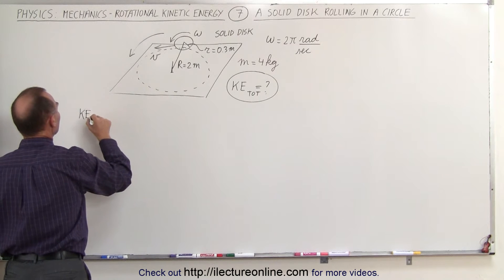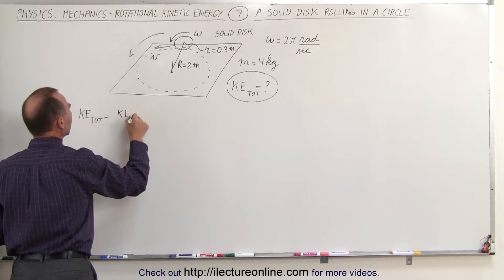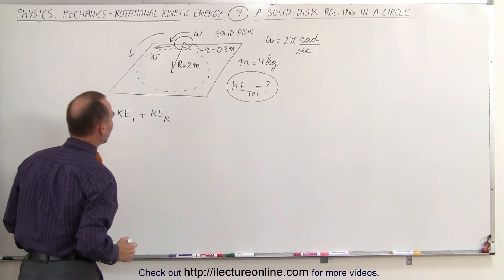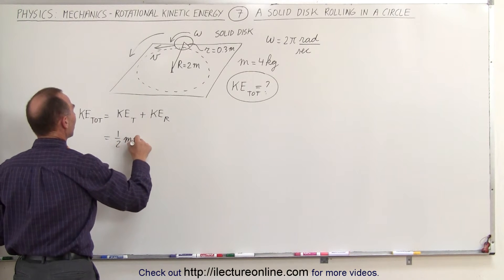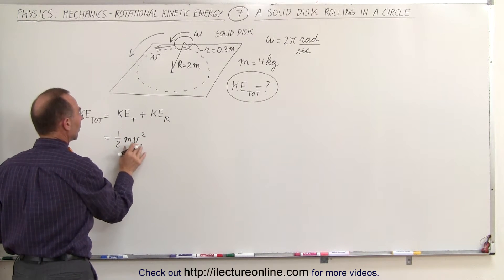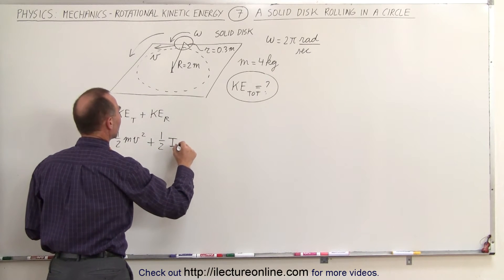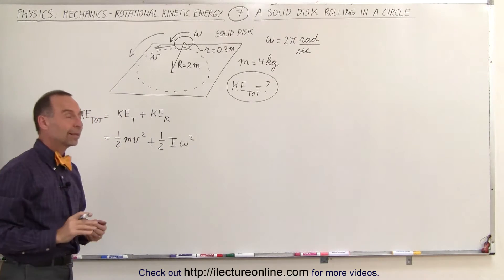That means the total kinetic energy is equal to the sum of the translational kinetic energy plus the rotational kinetic energy. Now, the translational kinetic energy is going to be 1/2 mv squared, and we'll need to find out what v is in this case, plus 1/2 times the moment of inertia times omega squared. Now, they did give us omega, and we'll worry about that later.